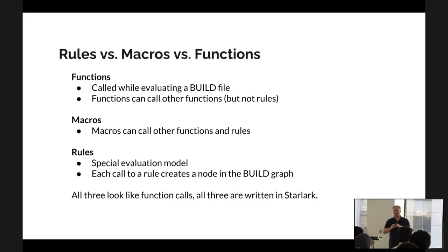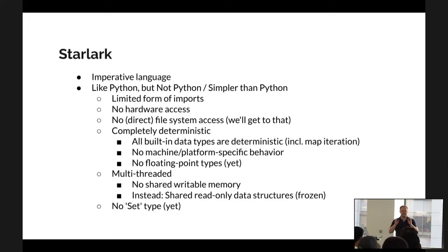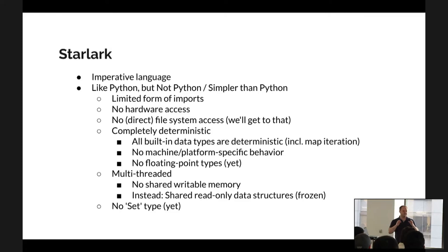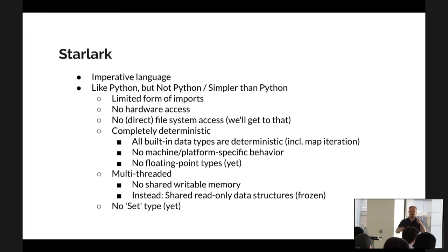All of these are written in Starlark, but rules are special. Starlark is an imperative language — this may be confusing because build files look declarative, but they are actually imperative. When Bazel executes a build file it starts at the top and goes top to bottom. After the build file is evaluated the rule nodes are special, and labels can refer to things that come after you in the build file — there isn't really any ordering dependency between rules, except in a corner case we won't cover today.